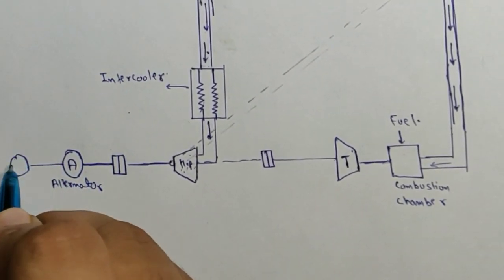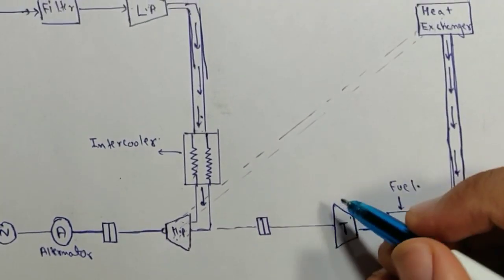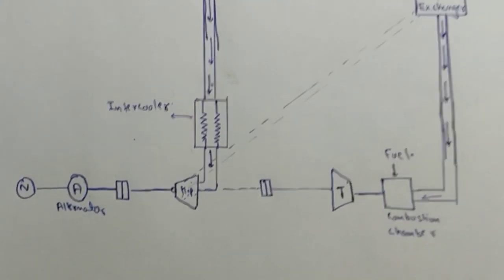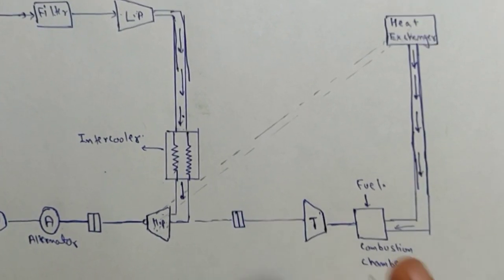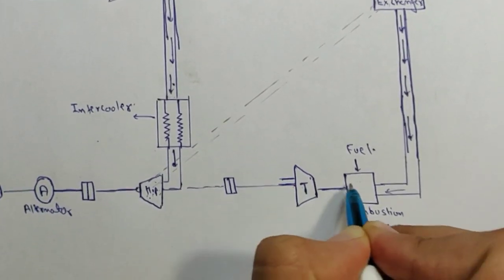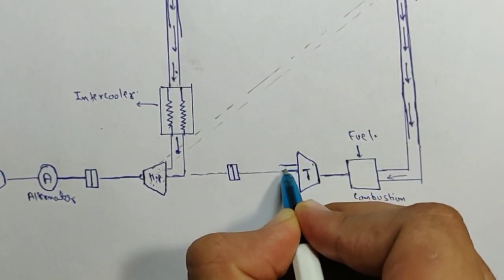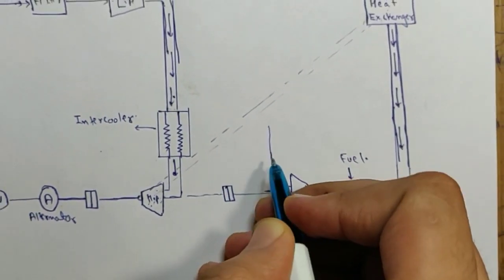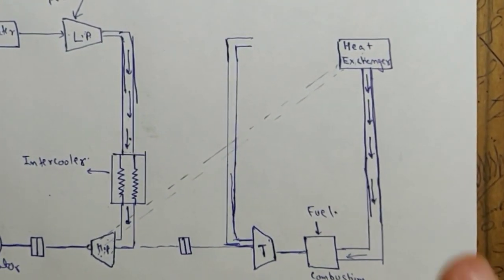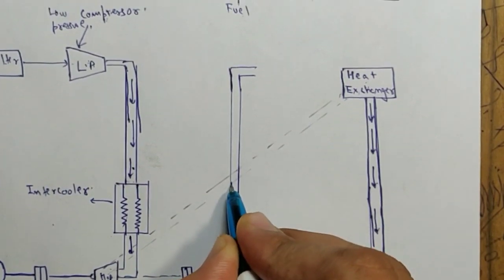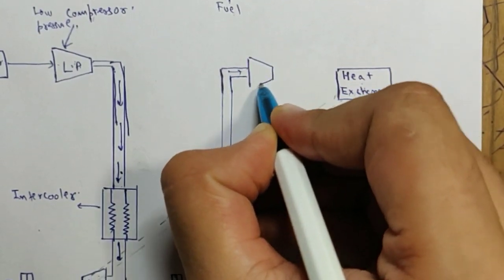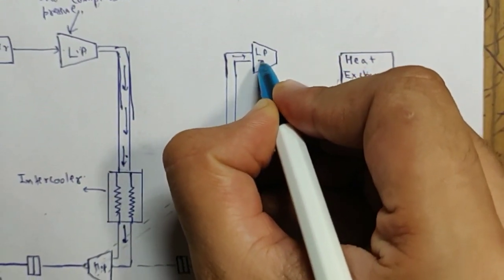So this is our electricity supply. We can still improve the efficiency of the cycle further. After the gases have expanded in the turbine, there is still some heat remaining. If we want to utilize that heat, we send these expanded gases into another turbine — we call this our low pressure turbine. The first turbine is our high pressure turbine.